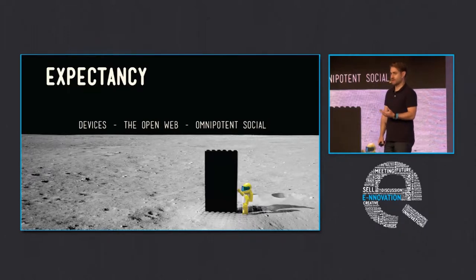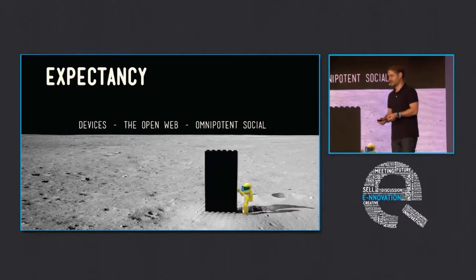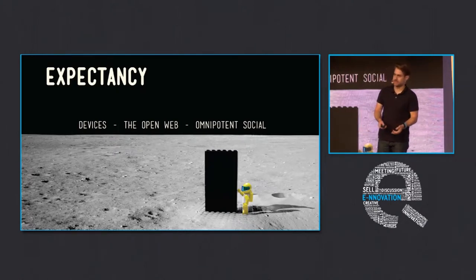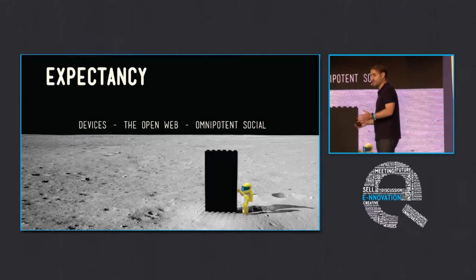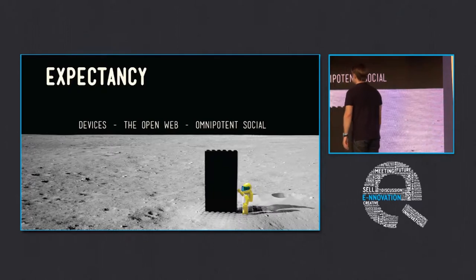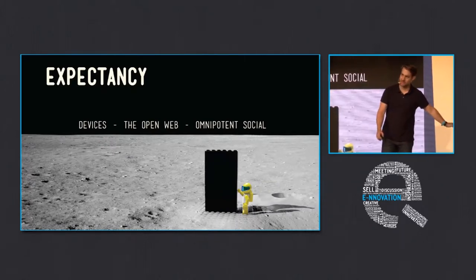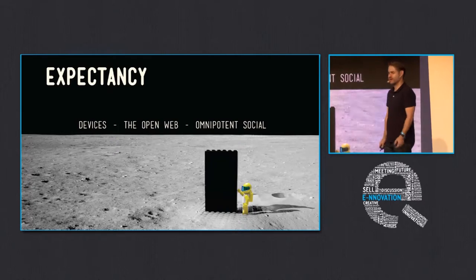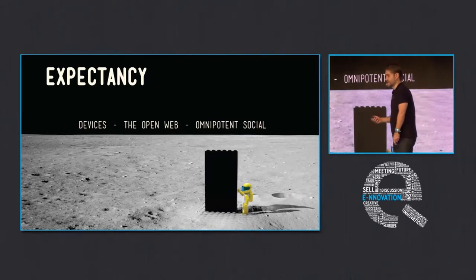People expect content on their devices to know where they are, when they are, why they're looking at it, and who else is on it. What used to be called the semantic web — now often called the open web — the metadata around all this content: comments, tags, geo-tags, that kind of ectoplasm of the web. People expect that to be used in a way that's relatable and gives them context. Social is now throughout everything we do — it's omnipresent.